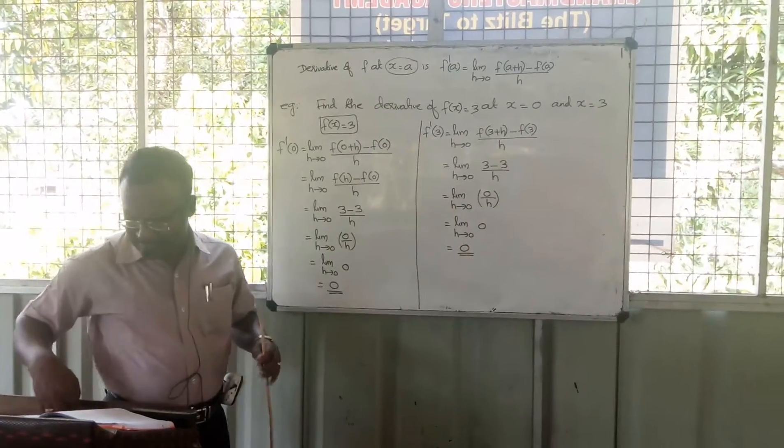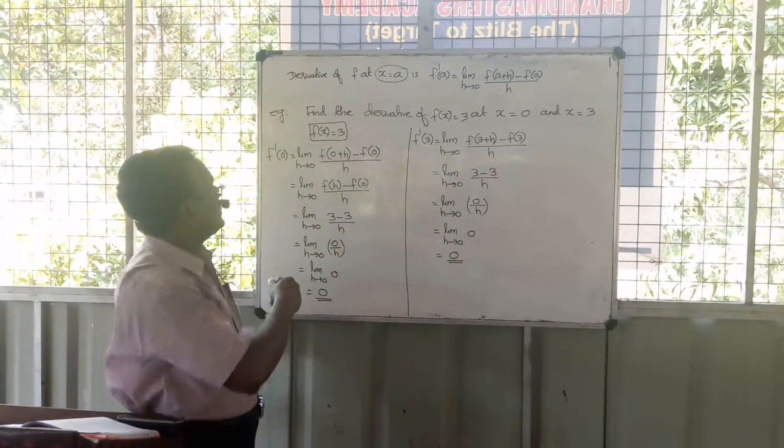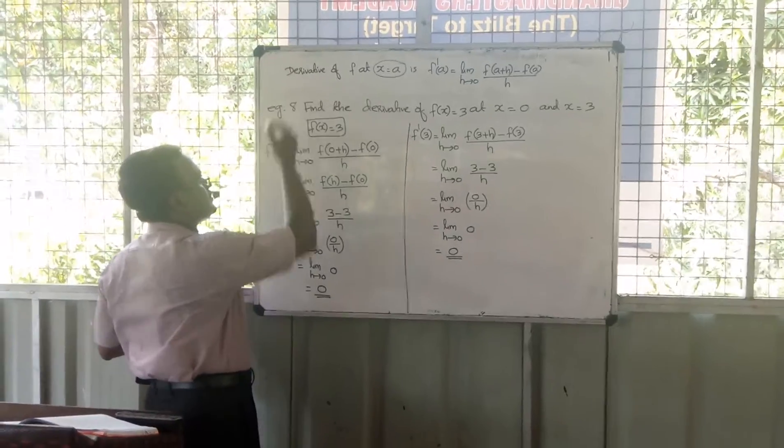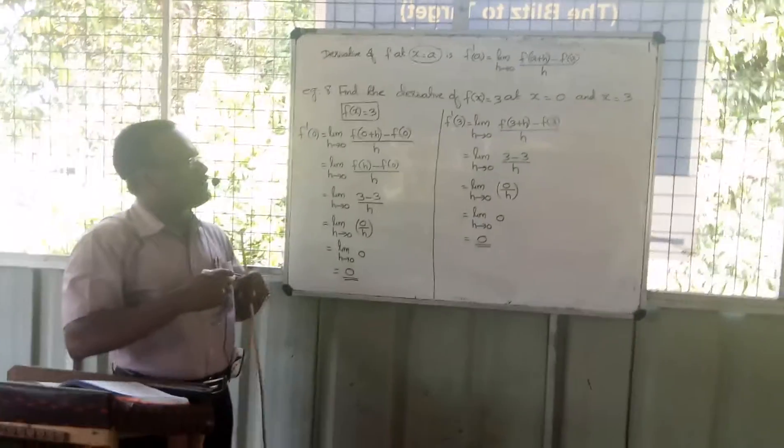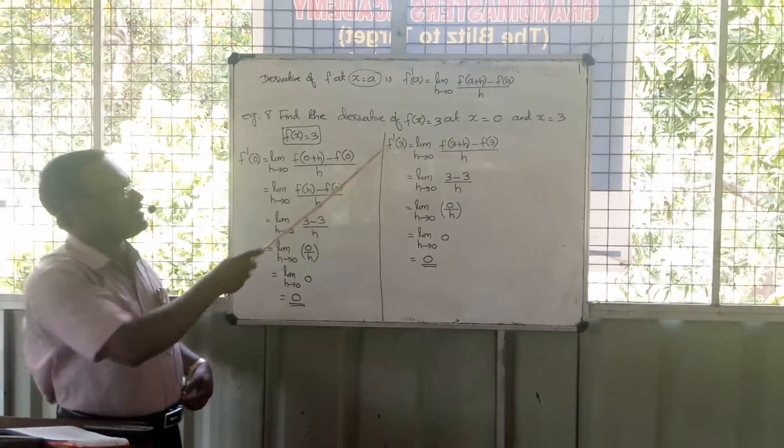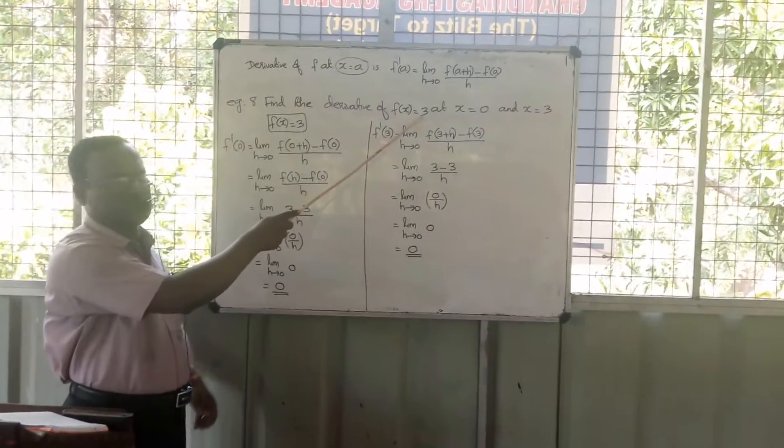Module 8 example. Find the derivative of f(x) = 3. The function is f(x) = 3.